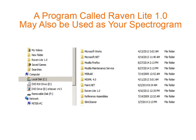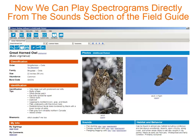You may also use a program called RavenLight 1.0 as your spectrogram. Now when we open the field guide, we can see the Sound section is giving us three options: Play, Loop, and Spectrogram.